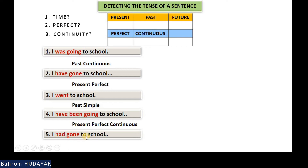Next: 'I had gone to school.' Another unfinished sentence, but it's not a problem to detect its tense. Time — it is past. Perfect — yes, there is perfect. Continuous — no, there is no continuity. The tense of the sentence is past perfect.